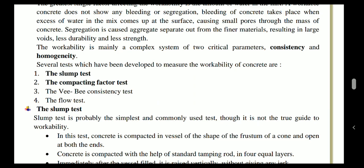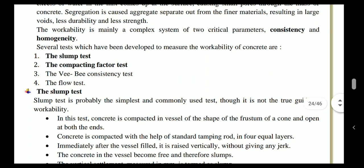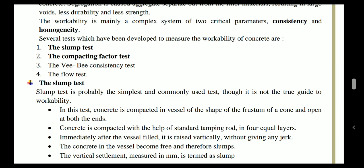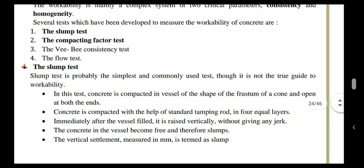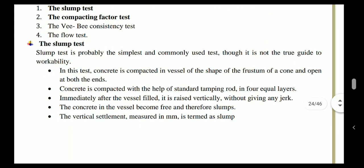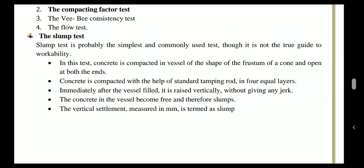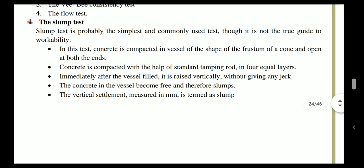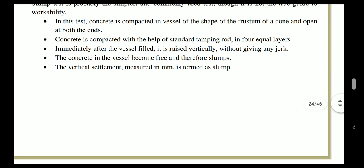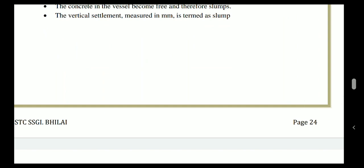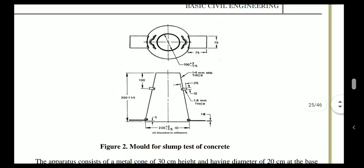Workability is mainly a complex system of two critical parameters: consistency and homogeneity. Consistency means the paste becomes thinner by increasing water. The following tests are done to measure workability: slump cone test, compaction factor test, Vebe consistometer test, and flow test. In the slump test — the most commonly done field test — concrete is compacted in a vessel shaped as a frustum of a cone that is open at both ends. Concrete is compacted in this mold in four layers, each layer compacted 25 times.